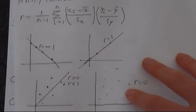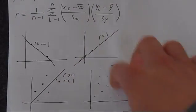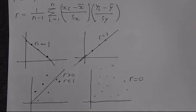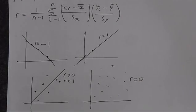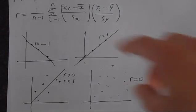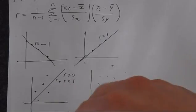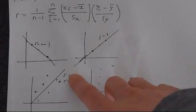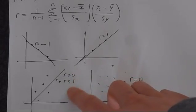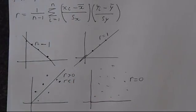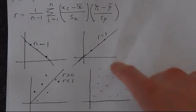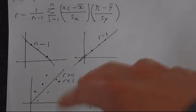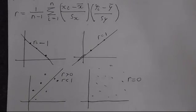But essentially what this is going to tell you is how correlated your data is. So if all of the data lies perfectly on a straight line sloping down the way, R equals minus 1. If all of the data is perfectly on a line sloping up the way, you're going to have R equals 1. If it's somewhere in between on the line and not, you're going to have R somewhere between 0 and 1. The closer to 1, the better the correlation. And if you're right down at 0 like here, there is just no correlation. No line is going to do justice to a very random data set.